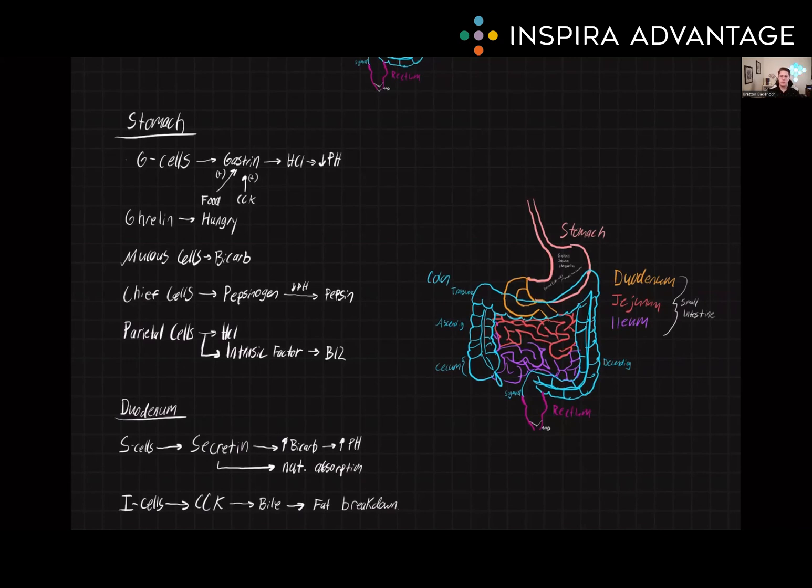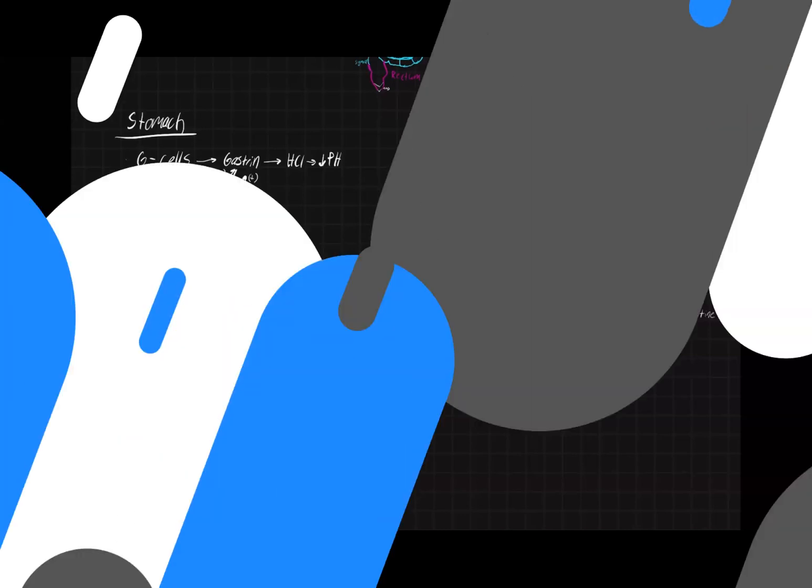Overall, hormones play a vital role in regulating the digestive process, from the release of stomach acid to the release of enzymes from the pancreas to the regulation of appetite. Understanding the role of these hormones in the digestive system is important for the MCAT as well as for understanding human physiology. Thank you so much for watching our video on the important enzymes you need to know for the MCAT, and I'll see you next time.